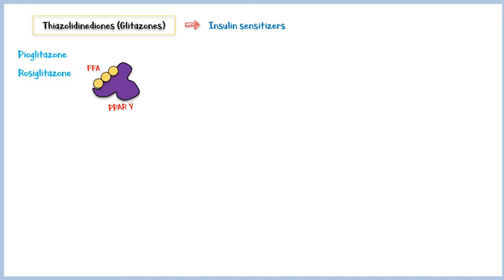Next we have thiazolidinediones, also known as glitazones. These medications include pioglitazone and rosiglitazone, which are insulin sensitizers similar to metformin. They act as agonists for a nuclear receptor known as the peroxisome proliferator activated receptor gamma, or PPAR gamma for short. Normally this receptor is activated when ligands such as free fatty acids bind to it.